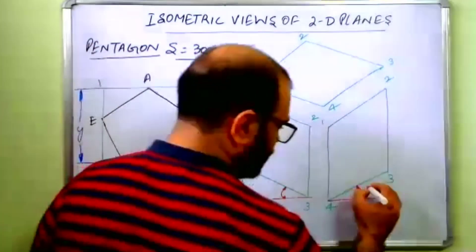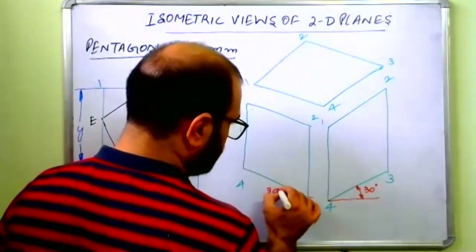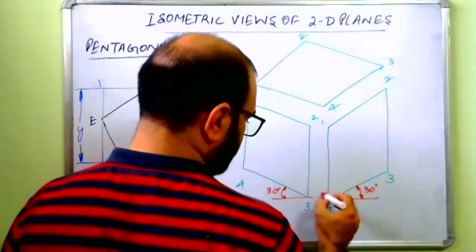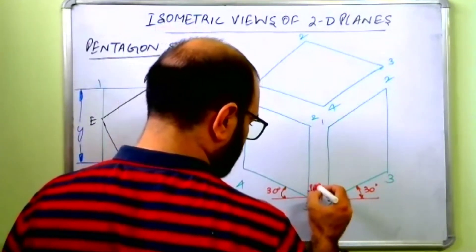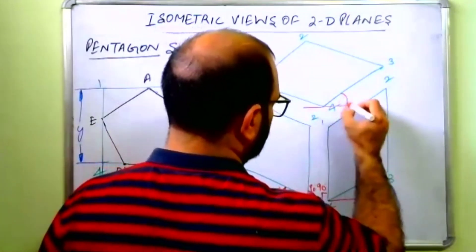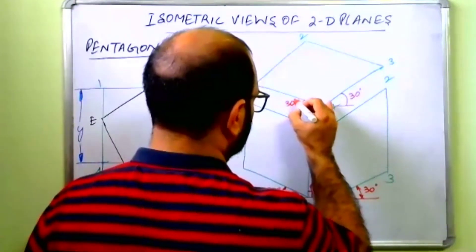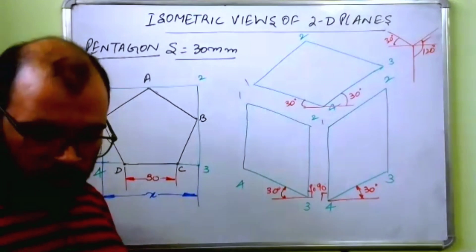This will be 30 degrees. This will be 30 and this will be 90. Similarly here, this will be 30 degrees. So again, now I will draw this.